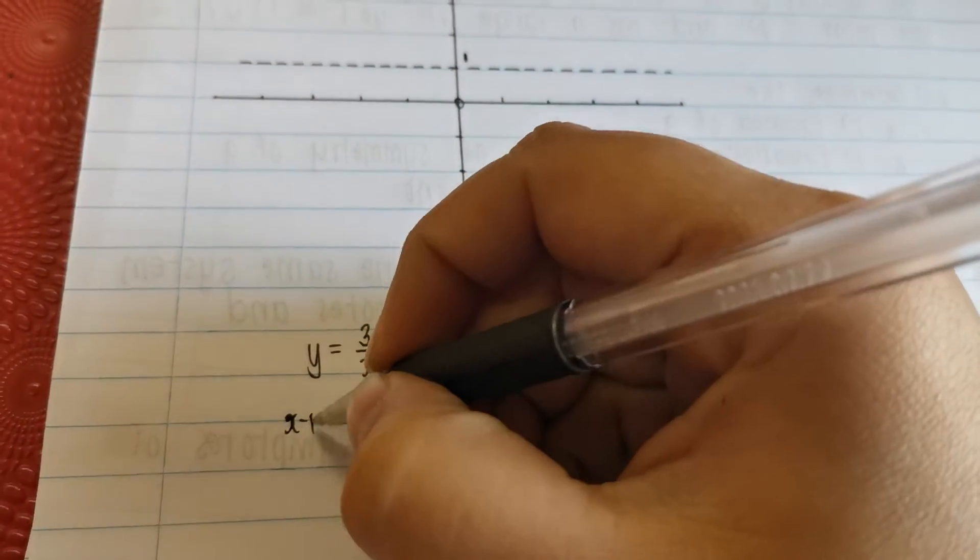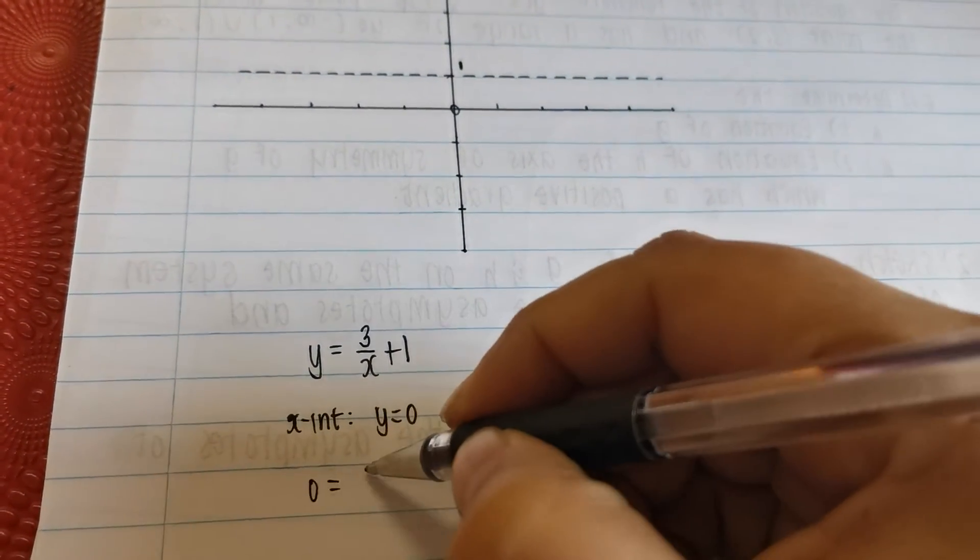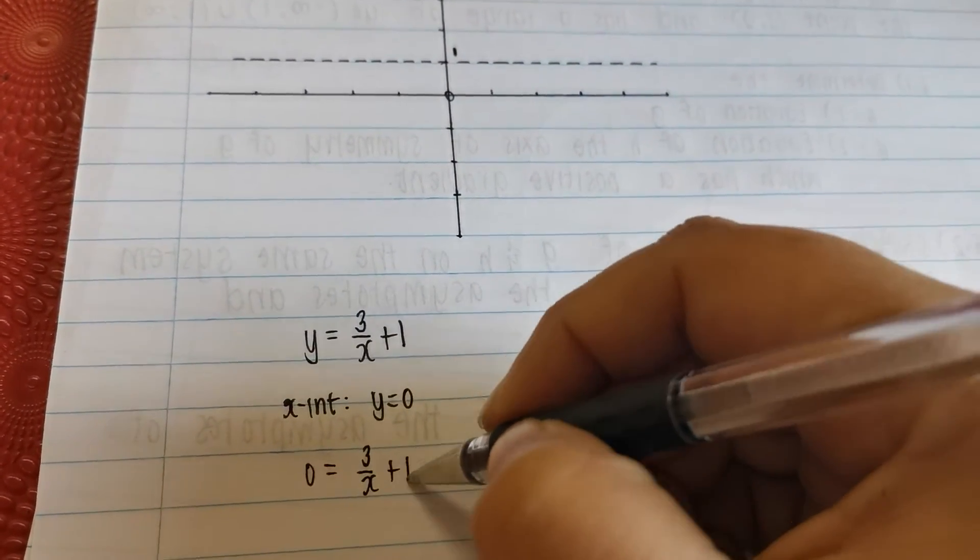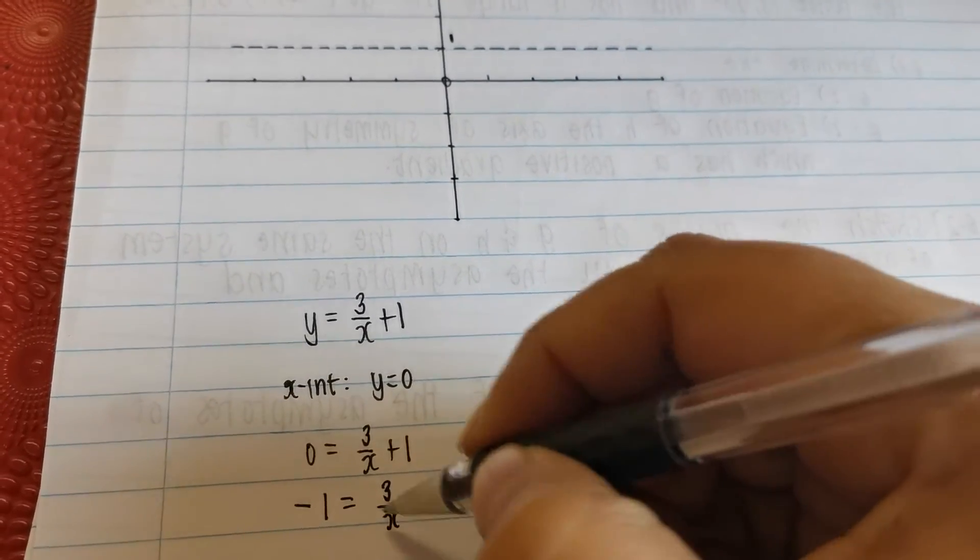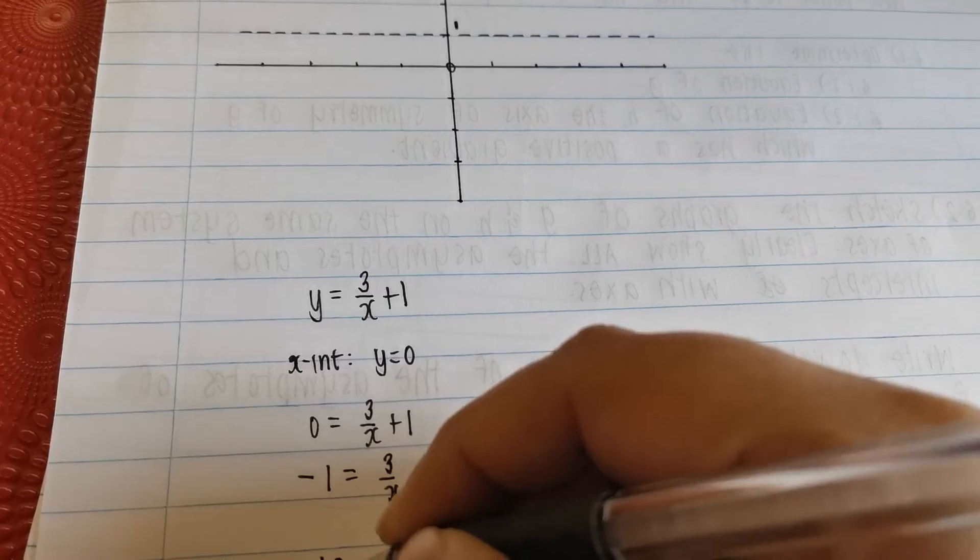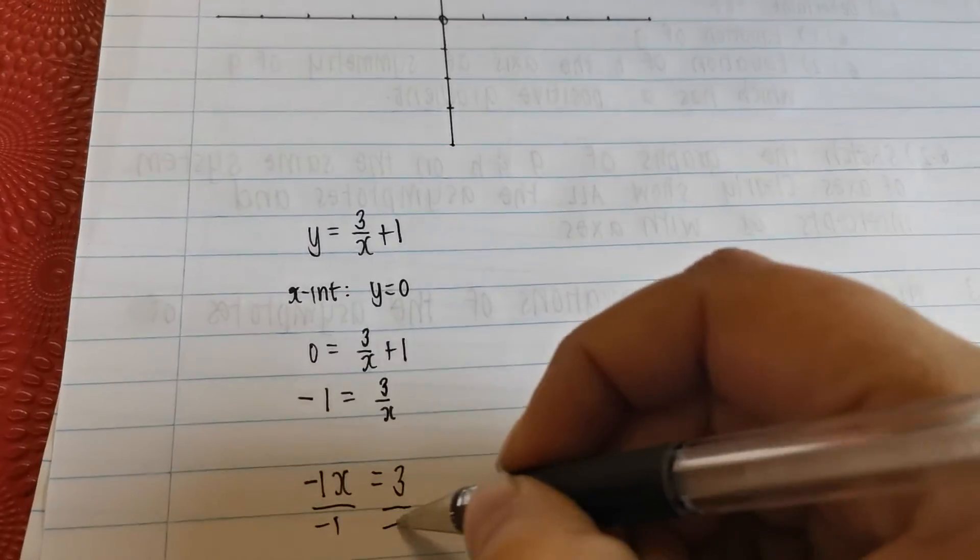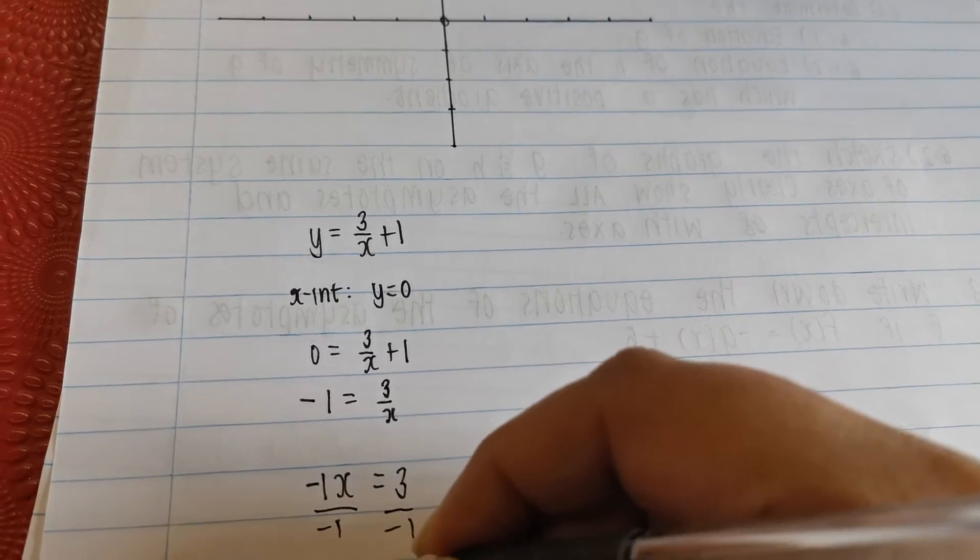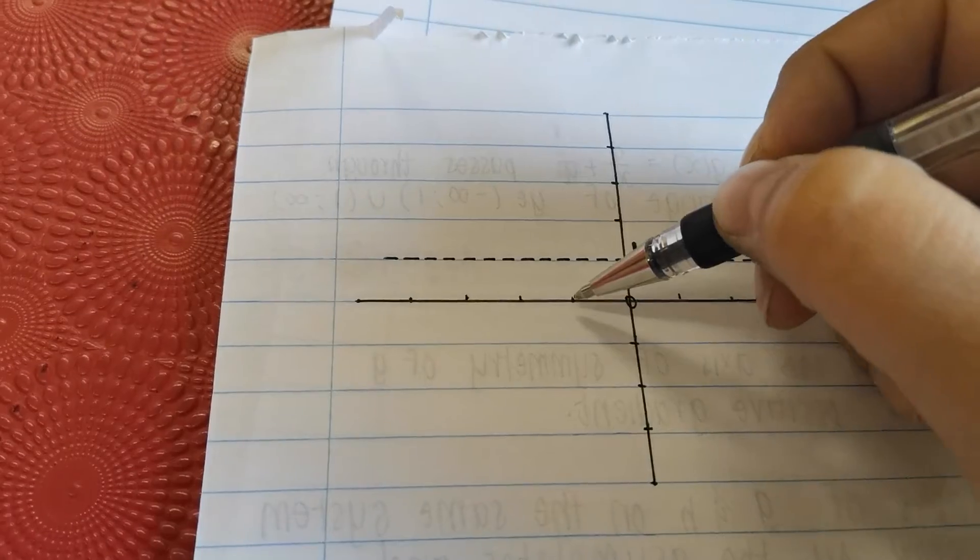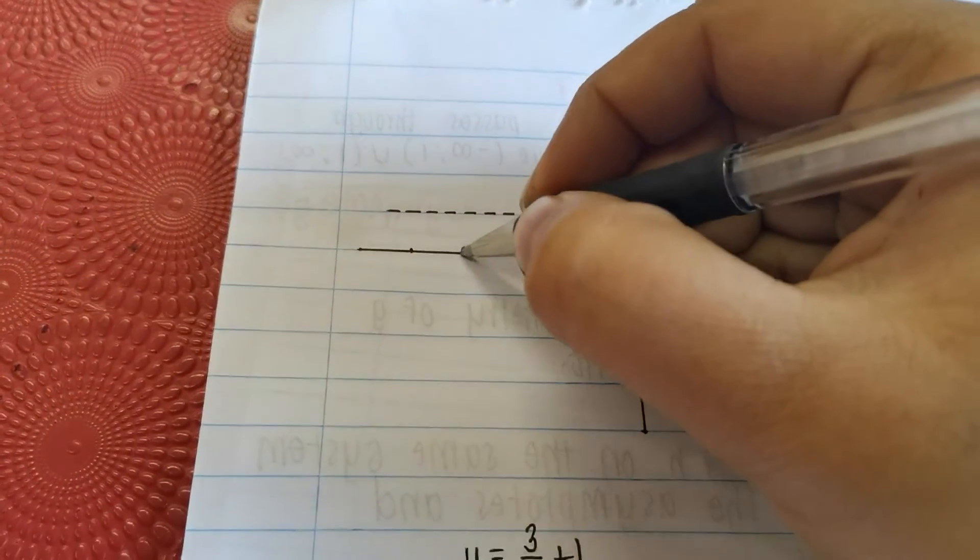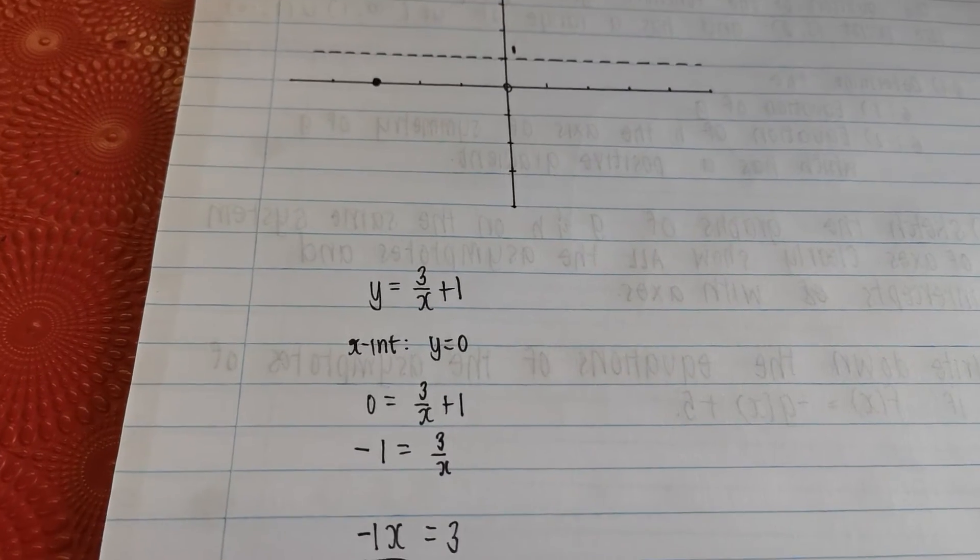x-intercept is where y is equal to 0. So 0 equals 3 over x plus 1. Take that over. Negative 1 equals 3 over x. Multiply by x, giving me negative 1x equals 3. And divide by negative 1, divide by negative 1, giving me x equals negative 3. So now I know at negative 3, which is here, negative 1, negative 2, negative 3, I've got an x-intercept. And we know that this is a hyperbola.